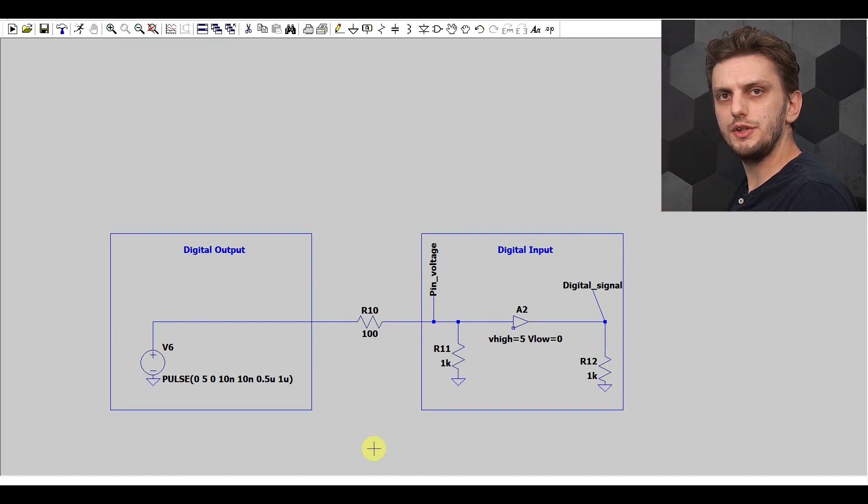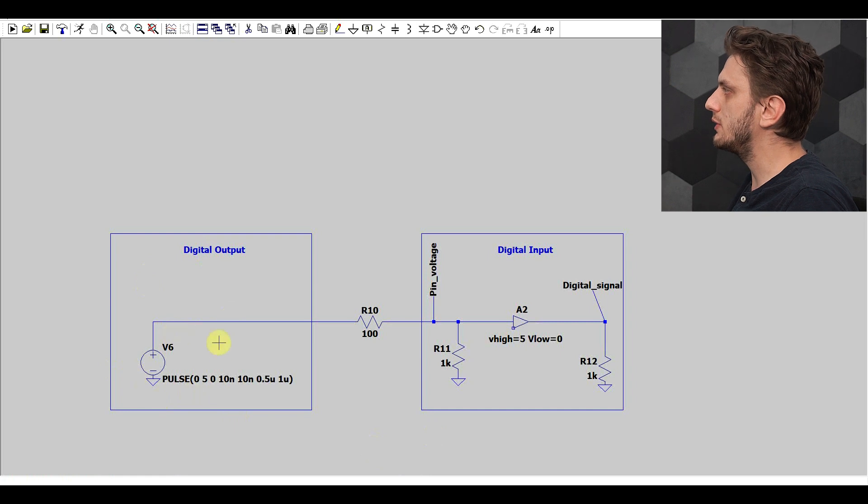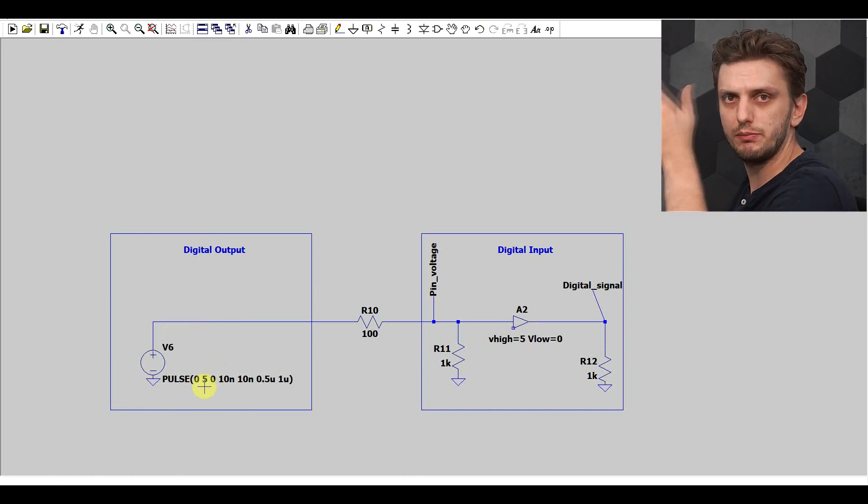So a basic digital interface would look something like this. You have a certain digital output that will create a pulse, in this case it's going from 0 to 5, so it's a nice 0 to 5 square wave. You have the communication line between the two components, usually there's also a series resistance present.